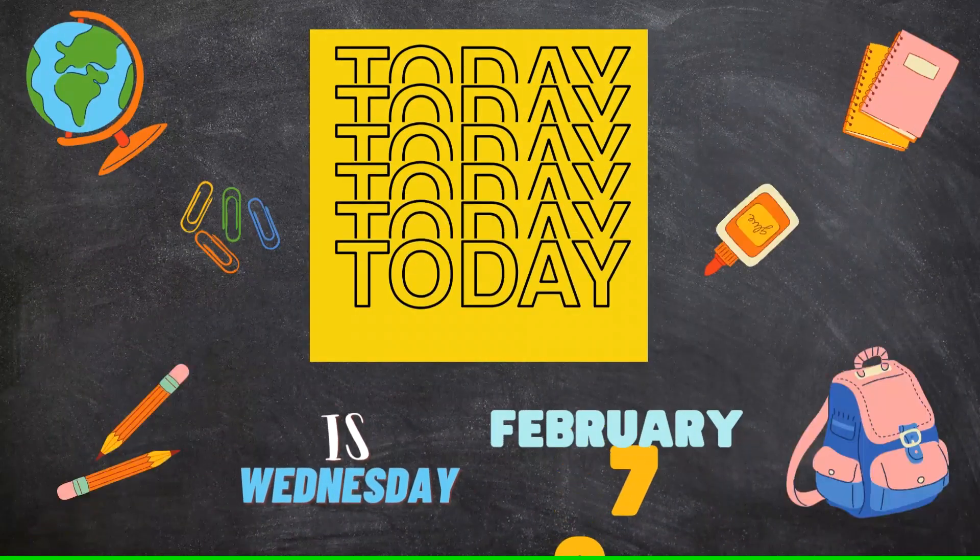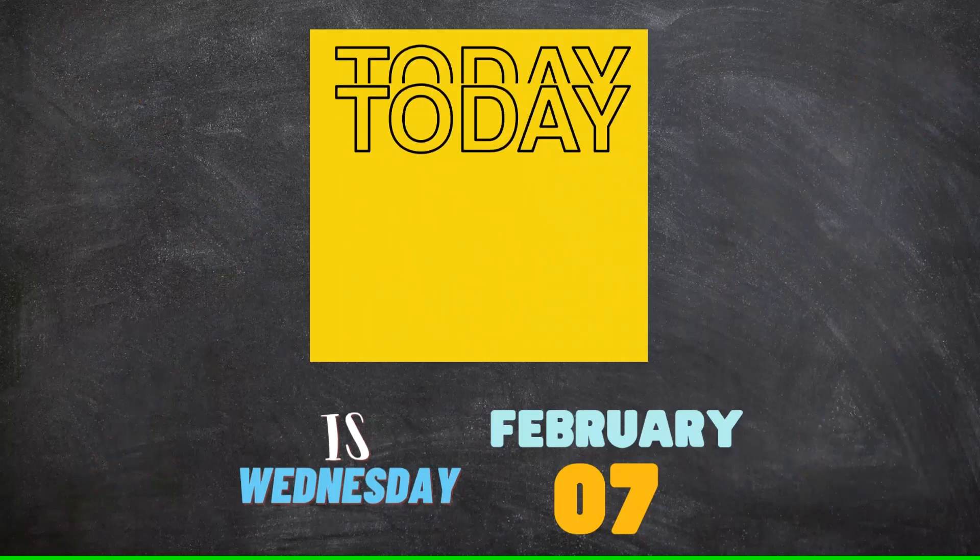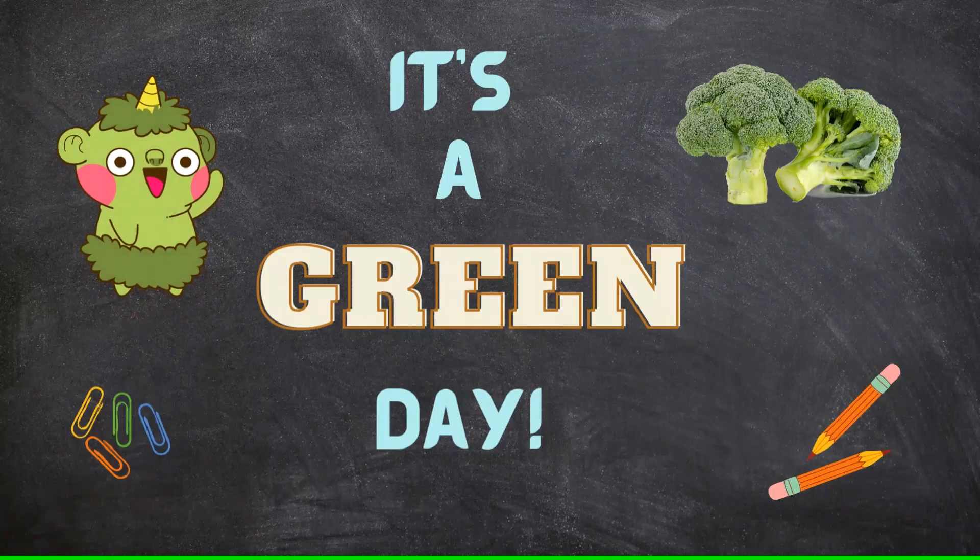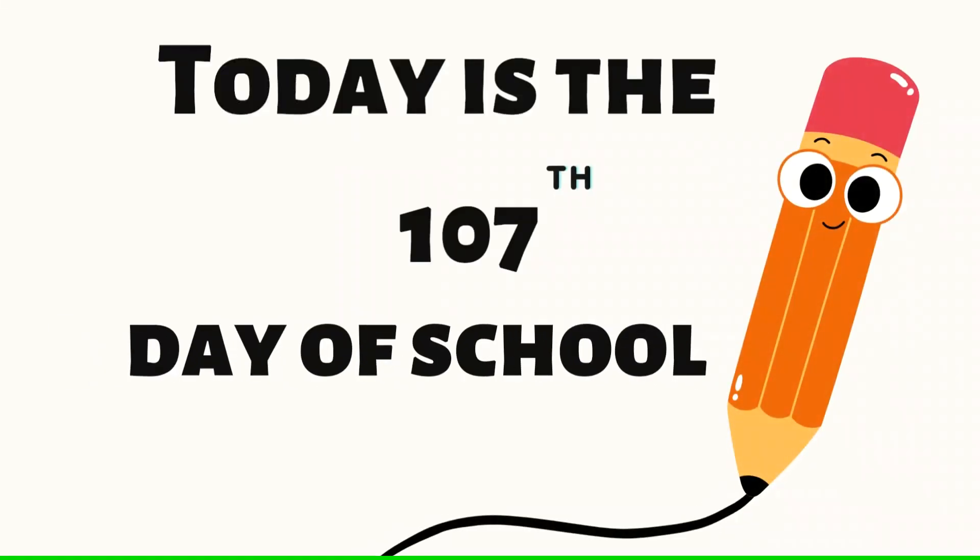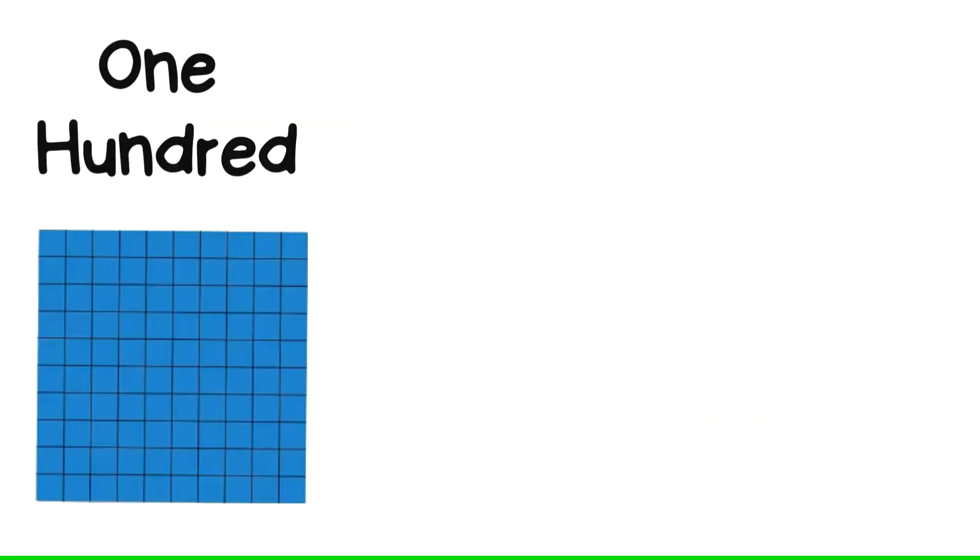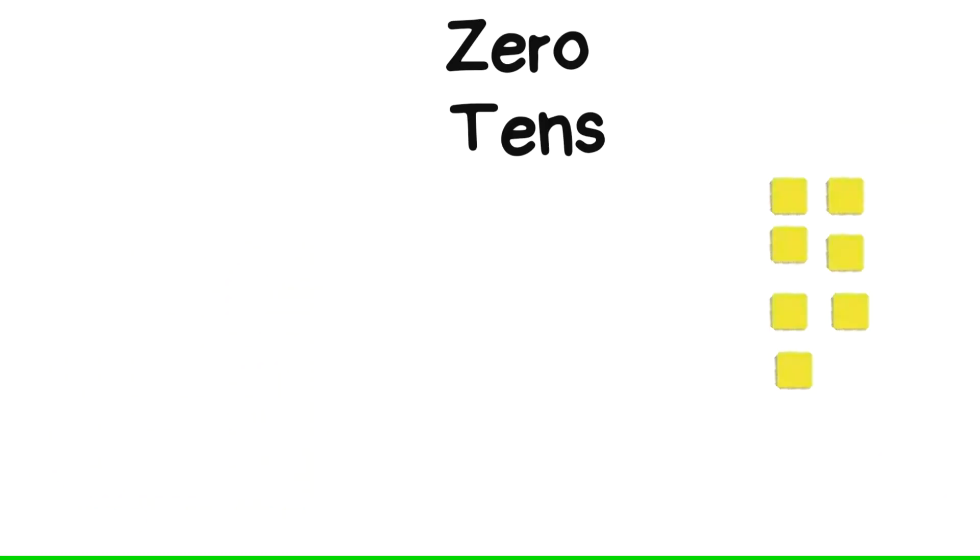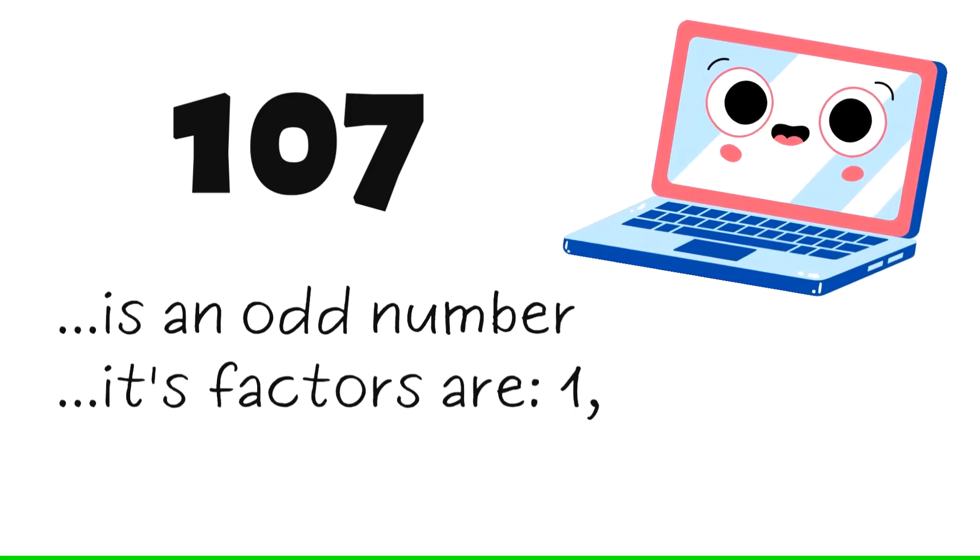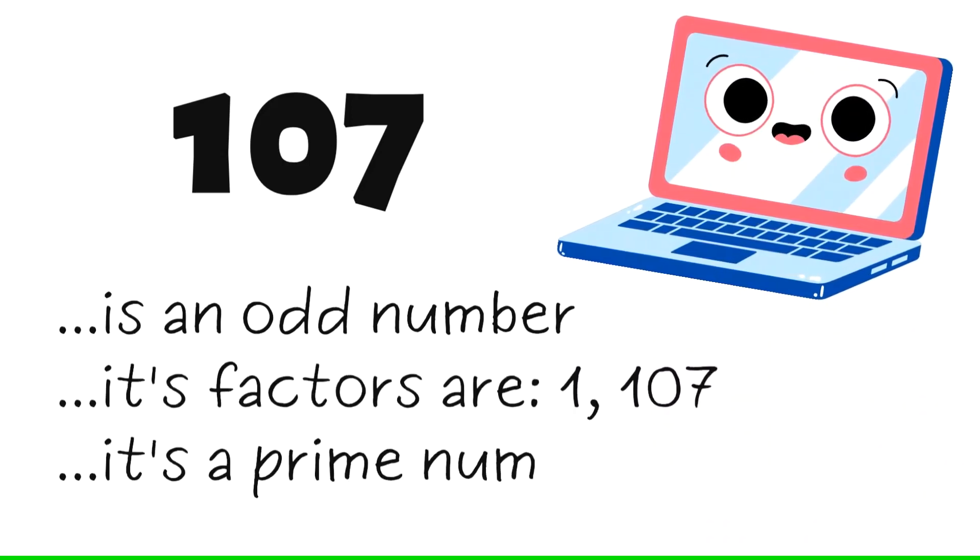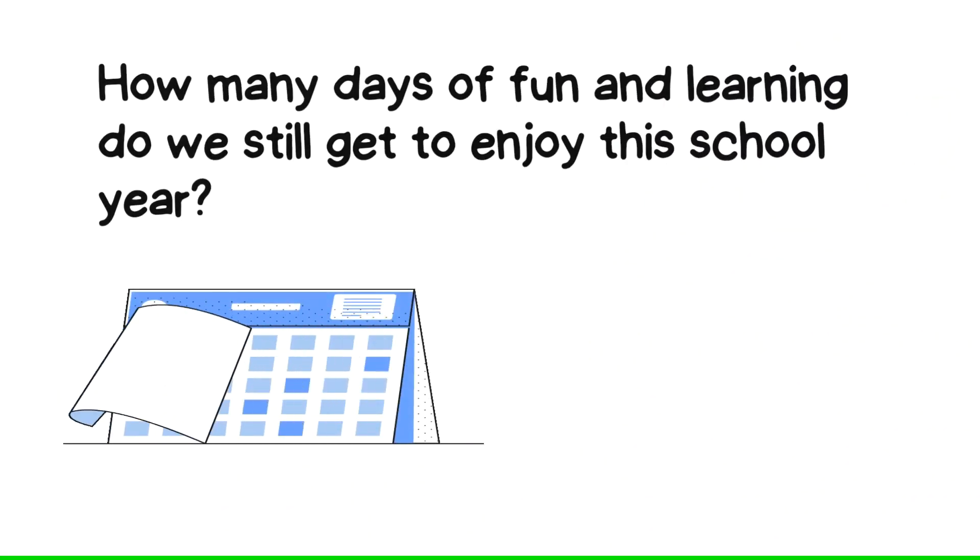Today is Wednesday, February 7th, 2024. It's a green day. Today is the 107th day of school. That looks like this in base 10 blocks: 100, 0 tens, 7 ones. The number 107 is an odd number. Its factors are 1 and 107. It's a prime number.